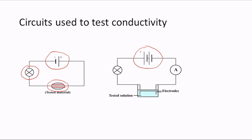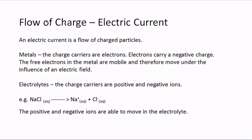In this second circuit, we have a battery — remember, a battery is more than one cell. The long line is the positive terminal and the short line is the negative terminal. We have a bulb, a solution to be tested, two electrodes dipped into the solution, and an ammeter to measure current.